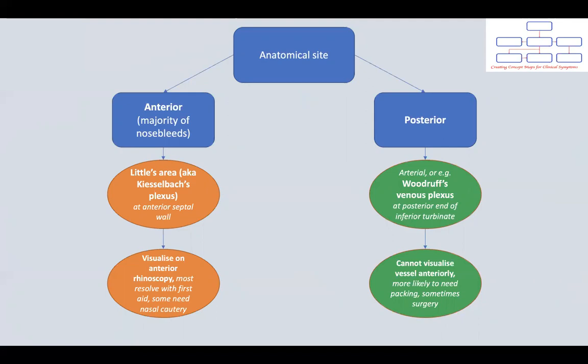Epistaxis in children is usually anterior as well. Posterior epistaxis is less common and more likely to occur in adults. It can be arterial or venous from Woodruff's area, the venous plexus situated in the posterior aspect of the nasal cavity. Posterior bleeding focal points require an endoscope to visualise and within the acute setting are more likely to require invasive treatment with nasal packing or, beyond that, surgery.